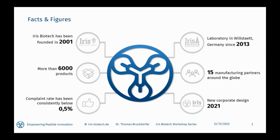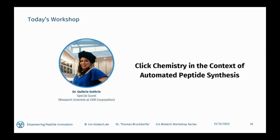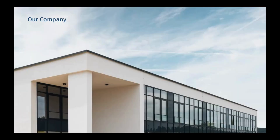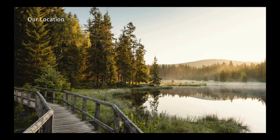Our portfolio consists of more than 6,000 products produced in our own laboratories or by selected manufacturing partners. We select very carefully with whom we work, which results in a very low complaint rate, consistently below 0.5% only. In 2021, we refreshed our whole corporate layout with a new logo, new design, and marketing. We are located in Marktredwitz, which is in Bavarian Germany, close to the border with the Czech Republic — a rural area in the mountains of northeast Bavaria, which is a hotspot of technology-driven small and mid-sized companies.